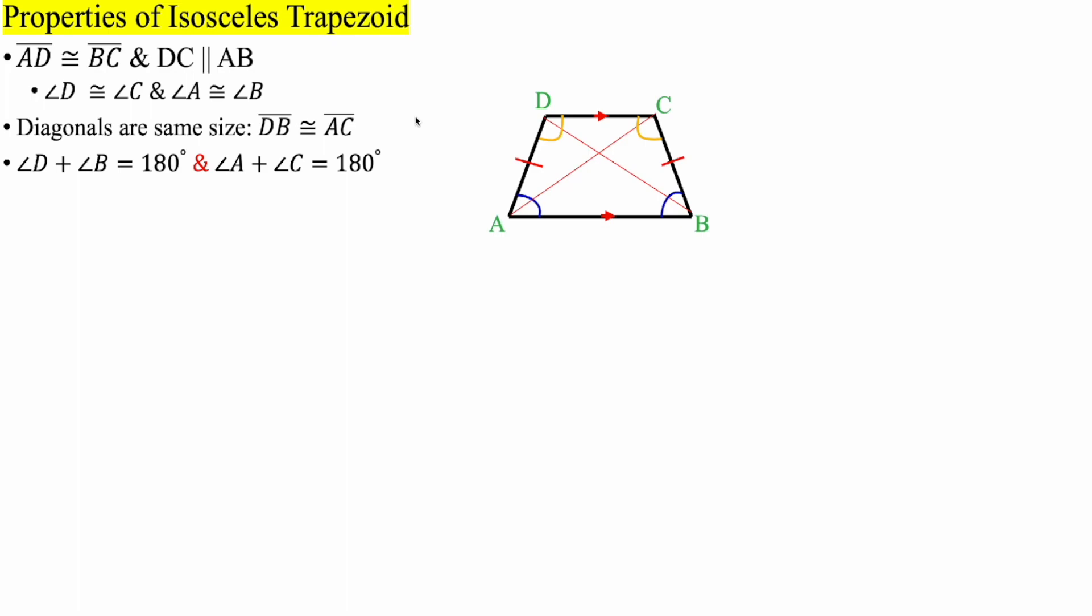So first, we have to go over the properties. So if you have an isosceles trapezoid, then line segment AD is equal to line segment BC, and also DC and AB are parallel.